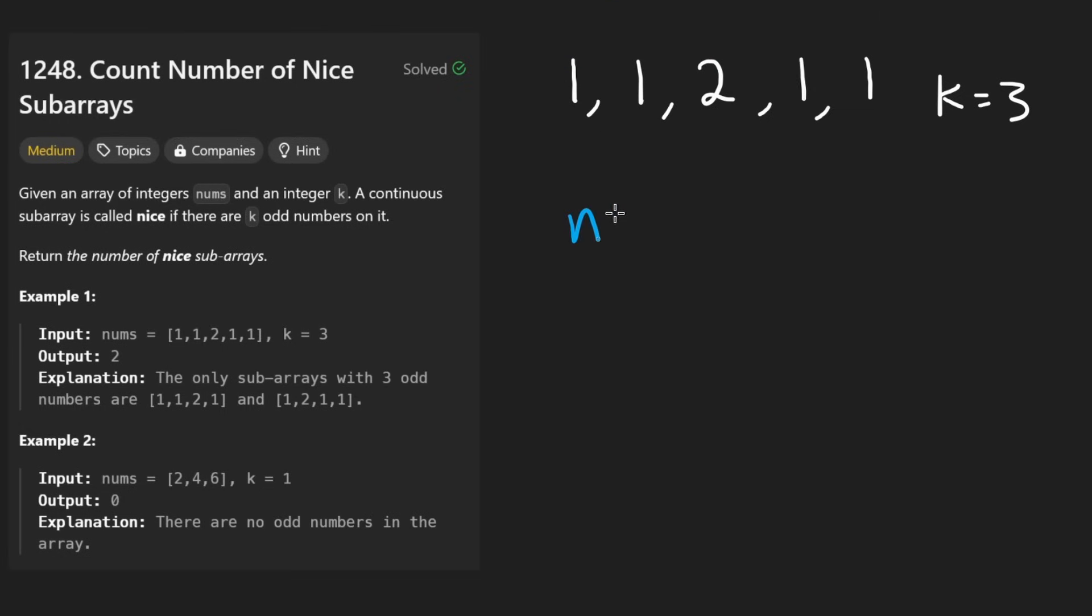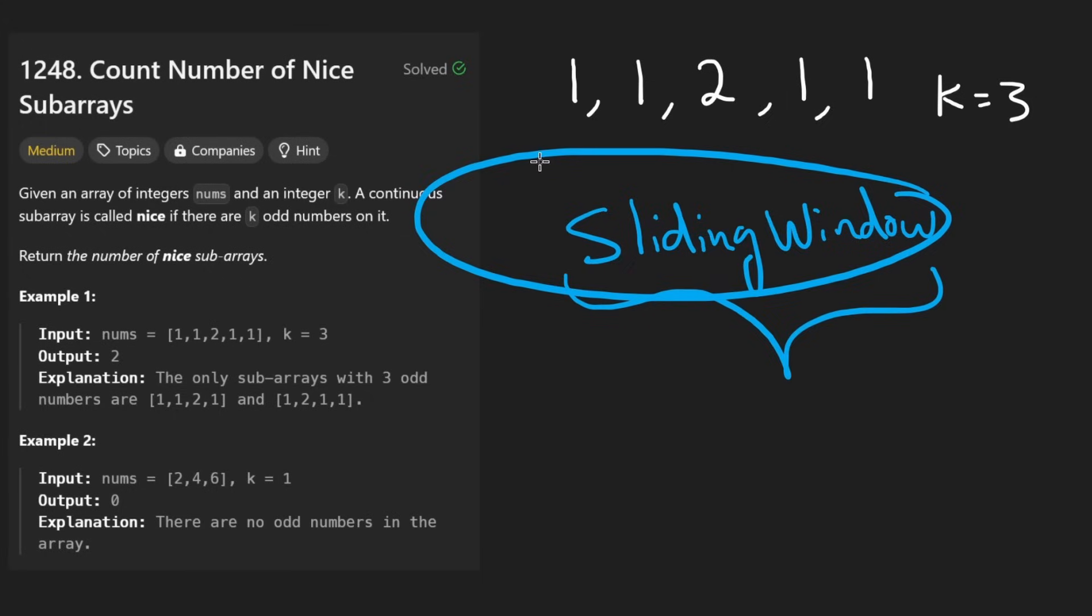So obviously brute force solution to this problem is going to be n squared. There's n squared subarrays, for each one we check if it has exactly k odd elements. The next improvement that you might think of is probably the sliding window. If you don't know what the sliding window is, I'd probably watch the video I made yesterday. This one is not a trivial sliding window problem, that's why I'm kind of saying you should try to know the basics first.